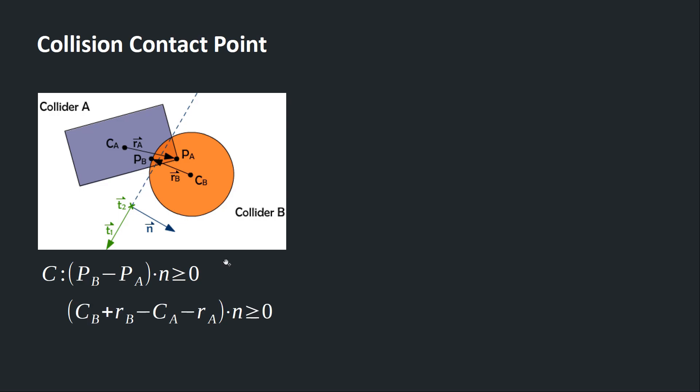A variable substitution will give us this second equation for the same position constraint. This entire thing dot N is greater than or equal to 0.